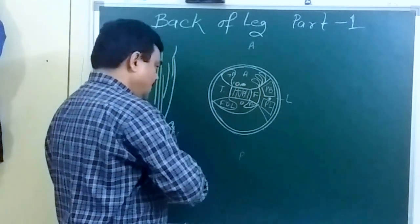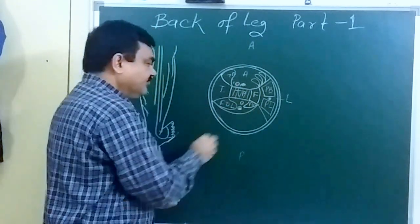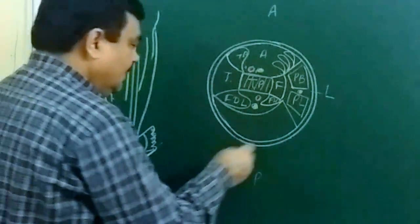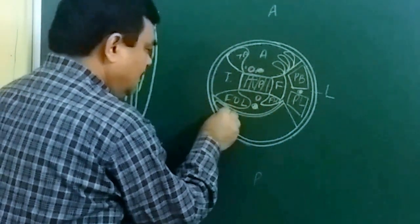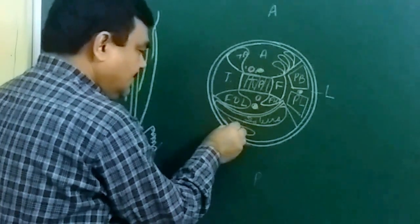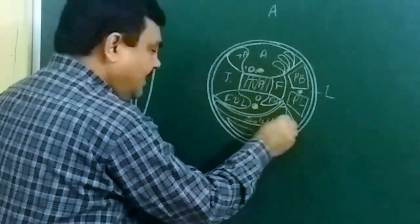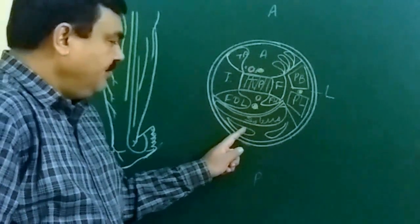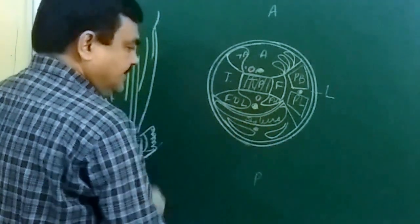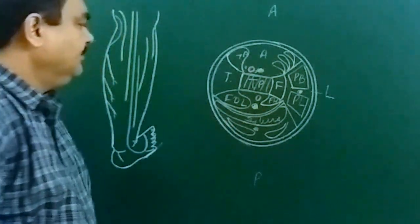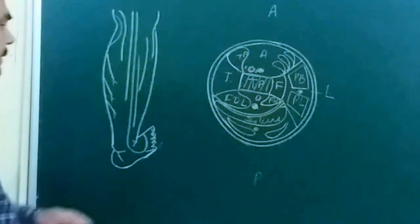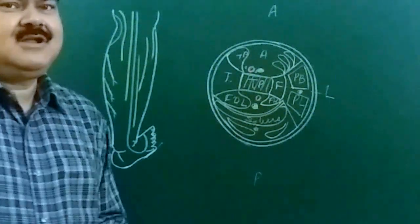Here is flexor hallucis longus muscle, here is flexor digitorum longus, here is the posterior tibial artery and tibial nerve. In the superficial part, this muscle is soleus, and here is the medial head and lateral head of the gastrocnemius. In between these two heads there is plantaris. So these structures are present in the posterior compartment of the leg.